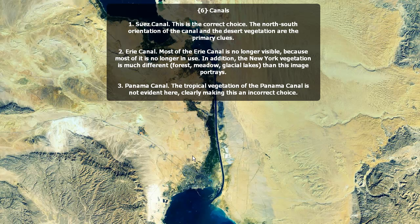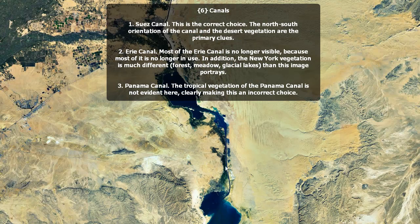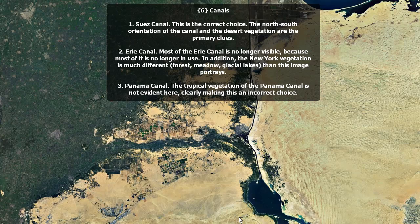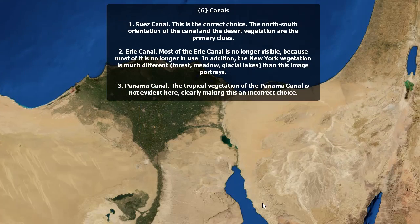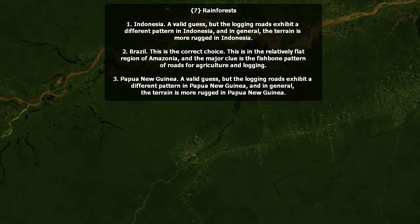Sahara Desert? If you had zoomed in, it might look like the Sahara Desert with these sand dunes. But the Sahara Desert is much larger, and the landforms here do not match. Canals? This is the Suez Canal. The north-south orientation of the canal and the desert vegetation are the primary clues. The Erie Canal? Most of it is no longer visible, because most of it is no longer in use except as a tourist attraction. The New York vegetation is much different — forest, meadow, glacial lakes — than this image portrays. Panama Canal? The tropical vegetation of the Panama Canal is not evident here, clearly making this an incorrect choice. So it is the Suez Canal.